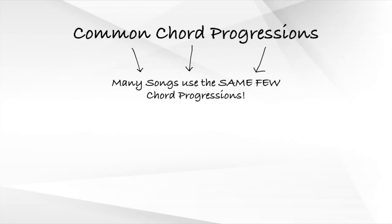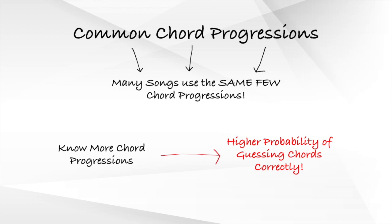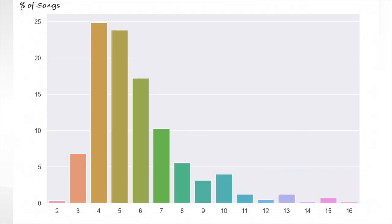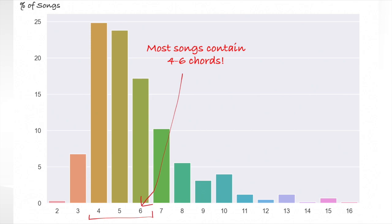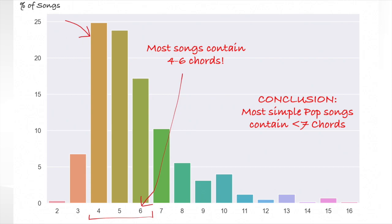The second thing you need to know to improve your chances of guessing chords correctly is that many songs use the same few chord progressions, and that the more chord progressions you know well, the higher your probability of being able to guess chords correctly. Here's a chart showing the percentage of songs against the total number of unique chords the song has. Most songs only have 4, 5, or 6 chords. In fact, 25% of the songs here contain simply 4 chords, and more than half contain between 4 to 6 chords. Most simple pop songs contain probably less than 7 chords.